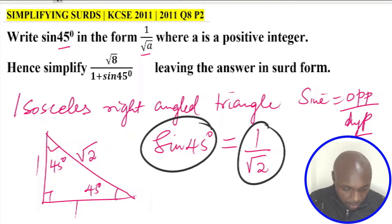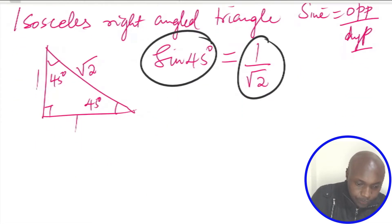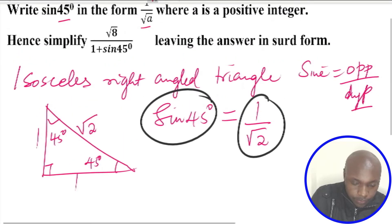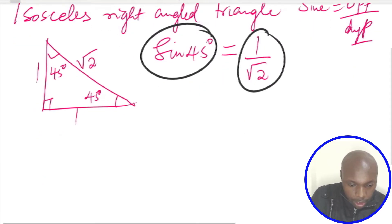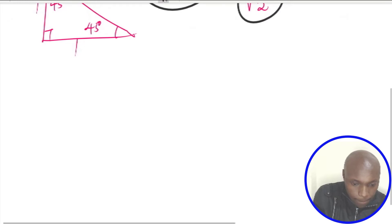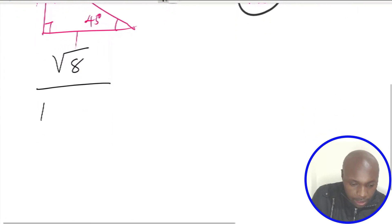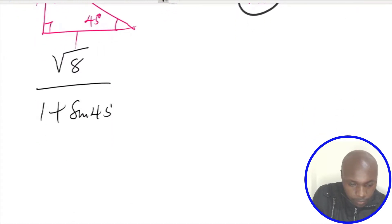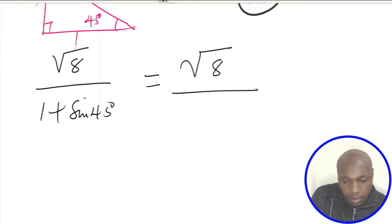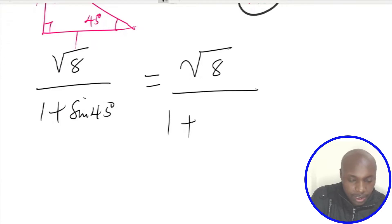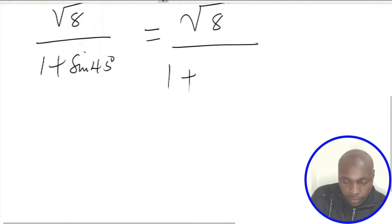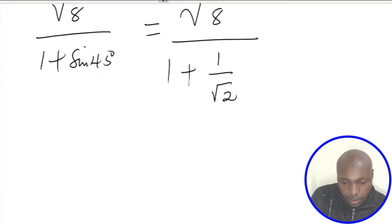We used the isosceles right-angled triangle to find that sin(45°) = 1/√2, so a = 2. Now we can work out the main expression: root of 8 divided by 1 plus sine of 45. Substituting, the denominator becomes 1 plus 1 divided by root of 2.